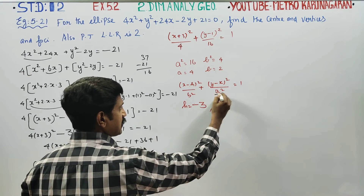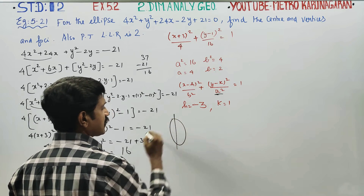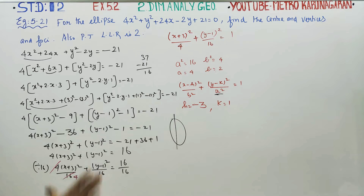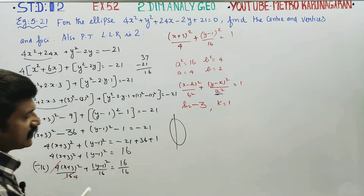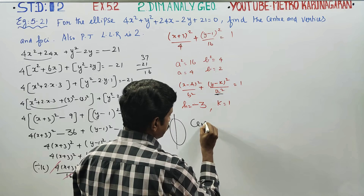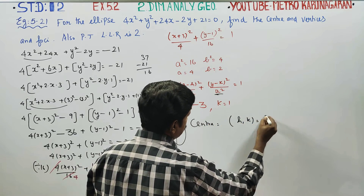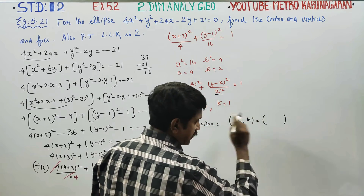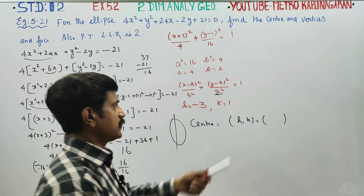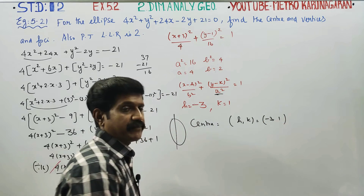This is a vertical ellipse, because the larger denominator a² is under the y term. Now let's find the center. For any ellipse, the center is (h, k). Here h = -3 and k = 1. So the center is (-3, 1).